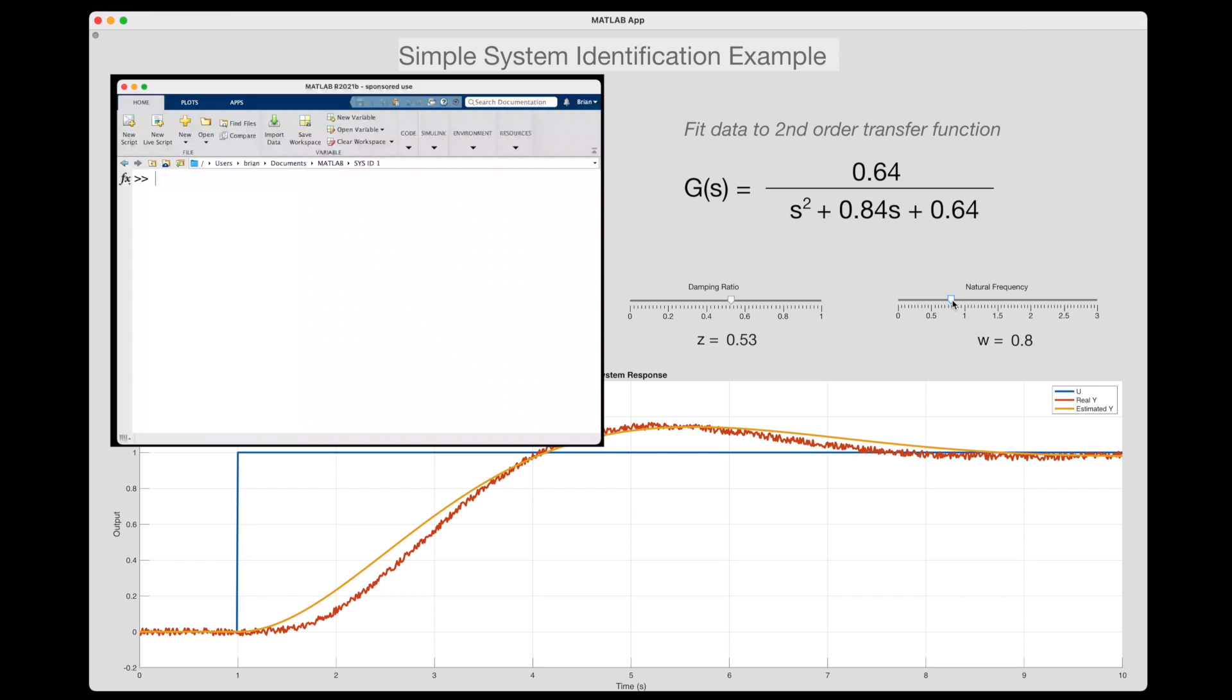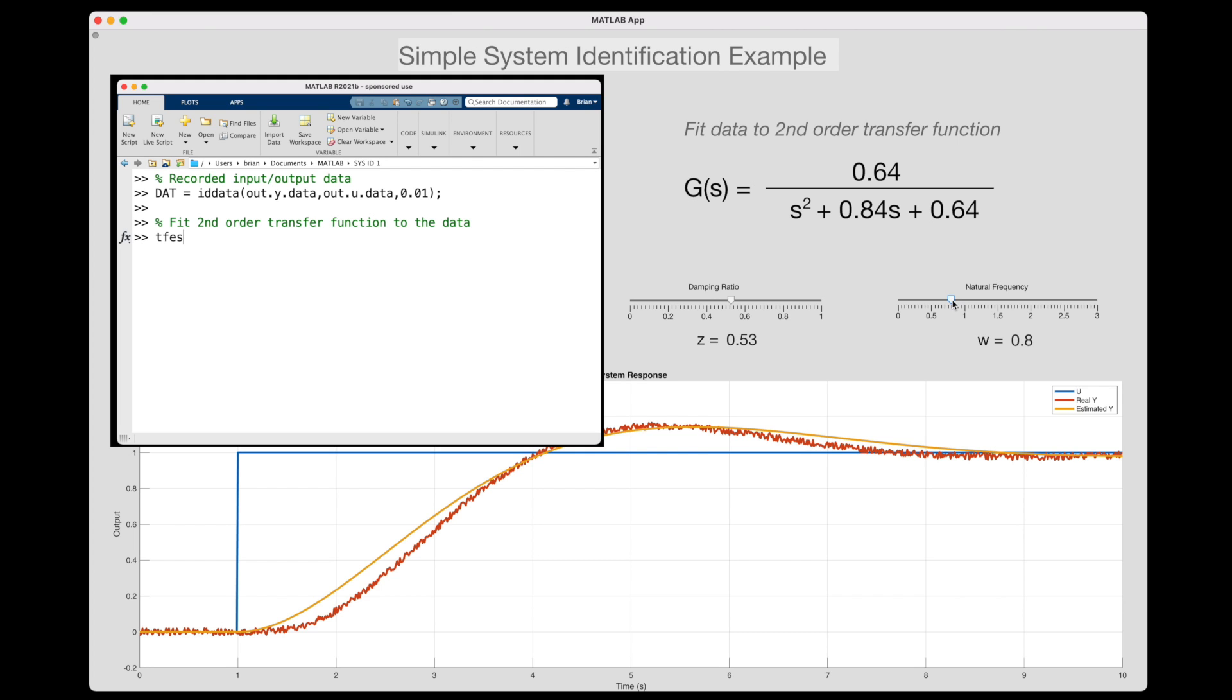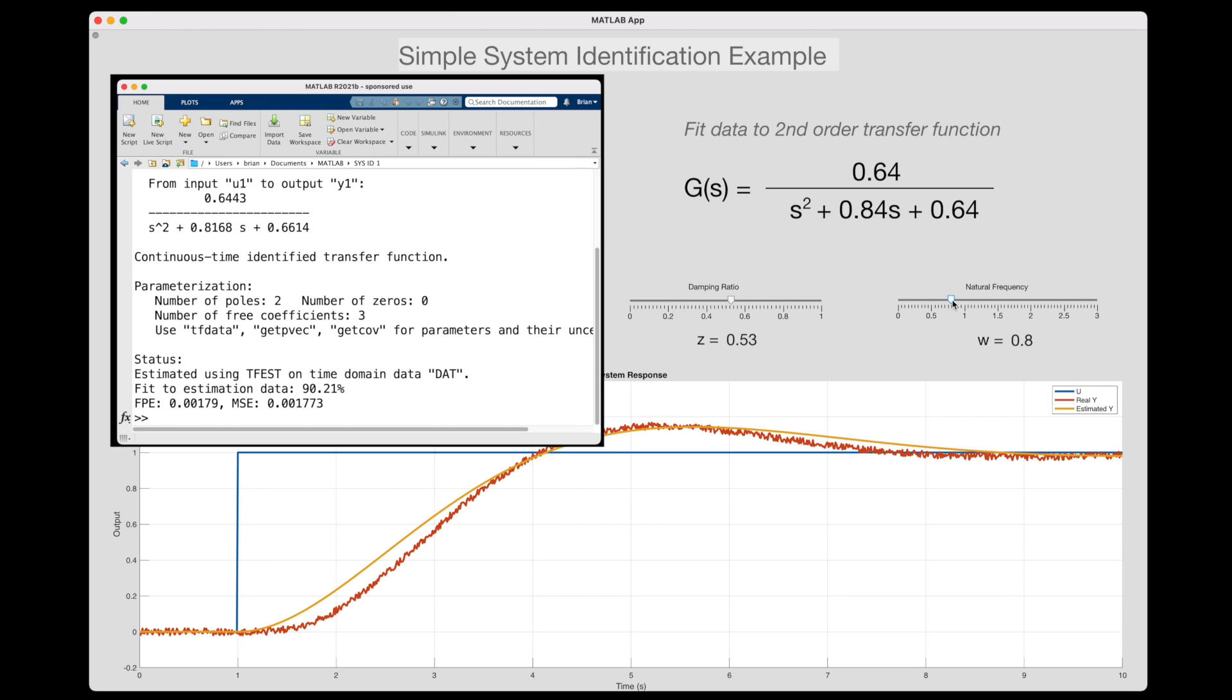And just to show you what this looks like, let me identify this really simple system with the transfer function estimator function in MATLAB. And that's part of the system identification toolbox. I've previously saved off the step input and step response of the real system, both at 10 millisecond sample times. And now I can use that data to fit to a transfer function with two poles and no zeros, just like we had before. And this is what it came up with. And you can see it's actually pretty close to what I did by hand, so that wasn't too bad. But let me just adjust this real quick anyway so that it's closer. Alright, so this is a more optimal fit of this model.